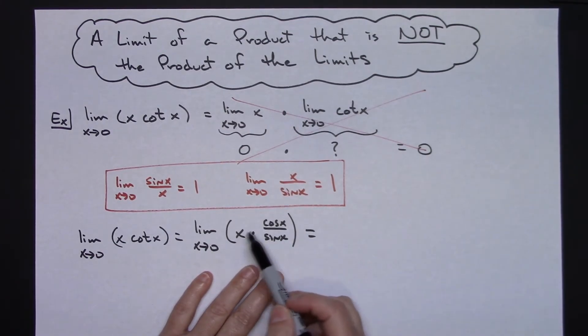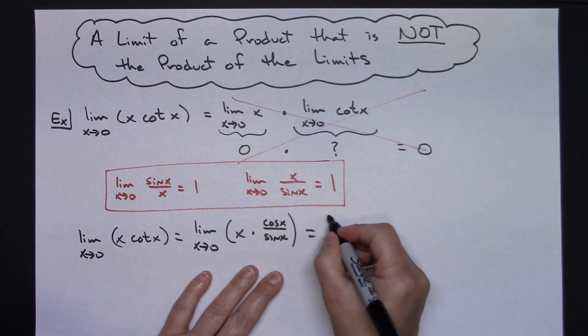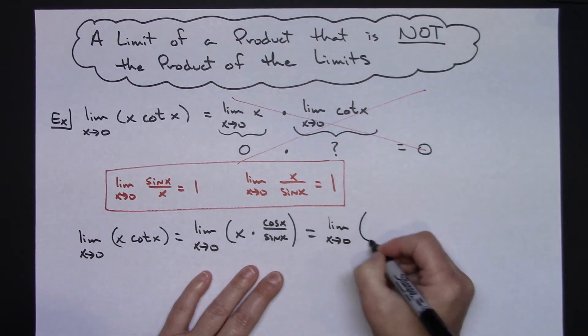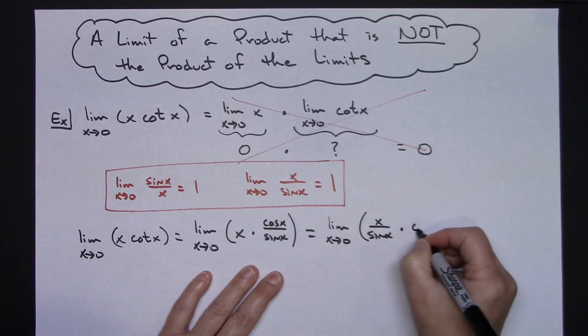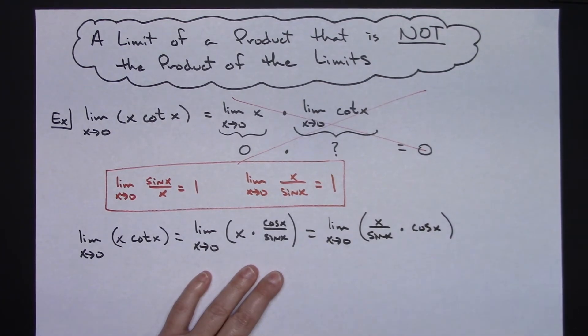So I'm going to do just a little bit of algebra manipulation here, rearrange this because I can multiply things in any order that I want. I'm not going to change anything. So the limit as x approaches 0, and I'm going to rewrite this as x over sine x times cosine x.